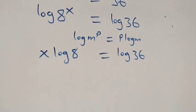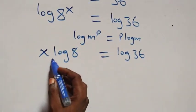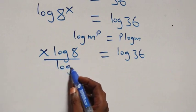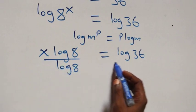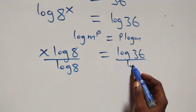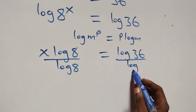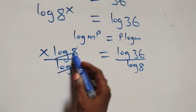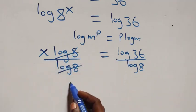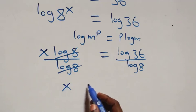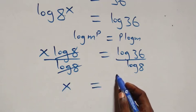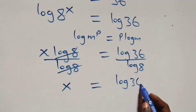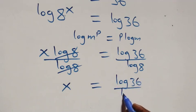The next step is to divide both sides by log 8 — divide this side by log 8 and also divide this side by log 8. Log 8 cancels each other, and we have x left, which equals log 36 over log 8.